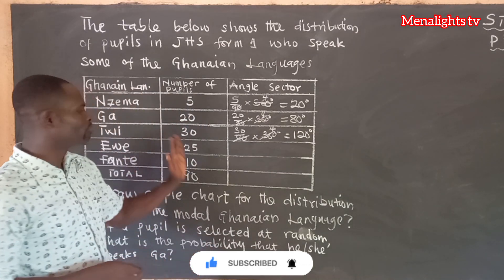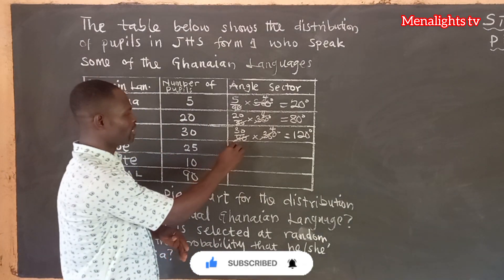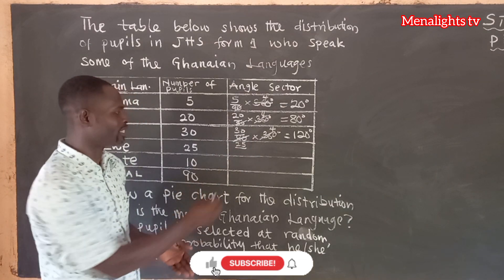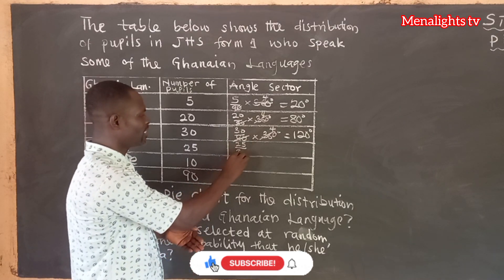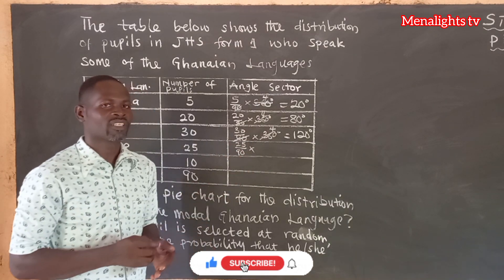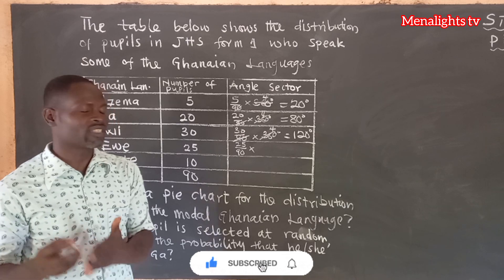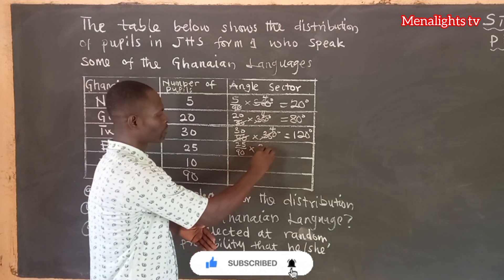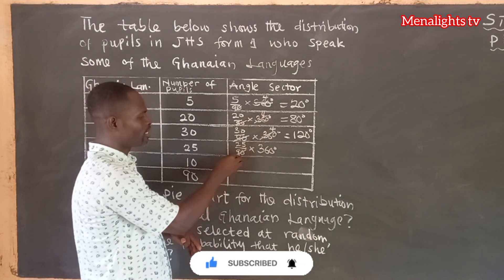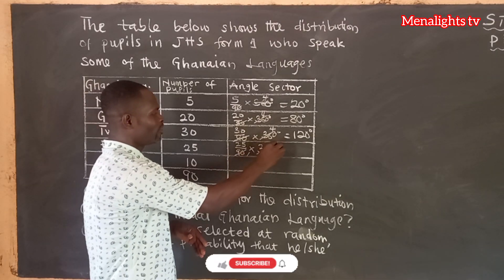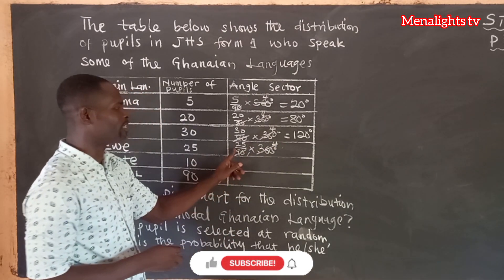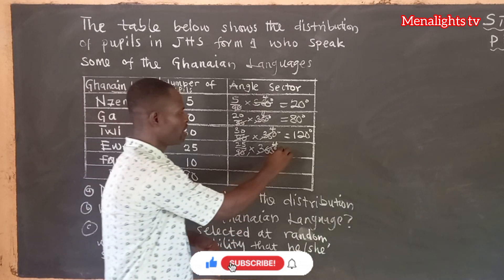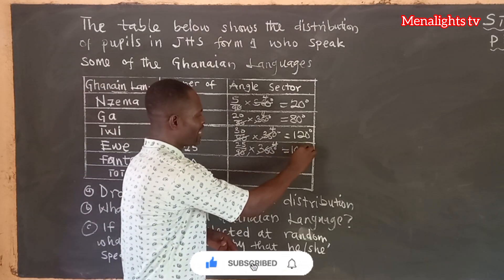Then we come to Ewe. So Ewe is 25 students over the total of 90, times the angles in a circle, which is 360 degrees. 90 goes into 360 four times, so 4 times 25 gives us 100 degrees.